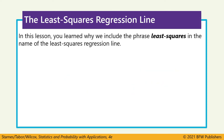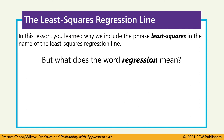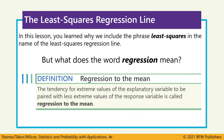We've talked a lot about least squares regression lines and lines of best fit, and we've defined what least squares means — but what does the word 'regression' mean? Regression to the mean refers to the tendency of points to revert to an average, to move back towards the mean.